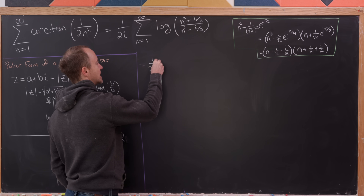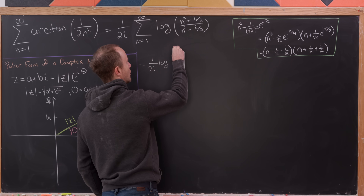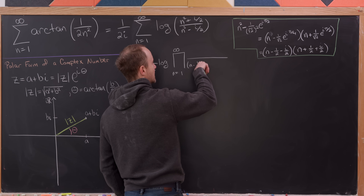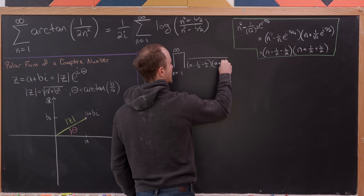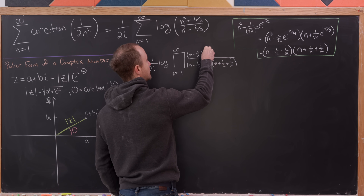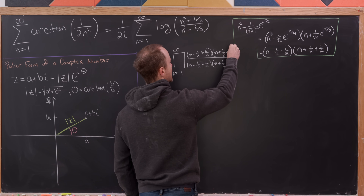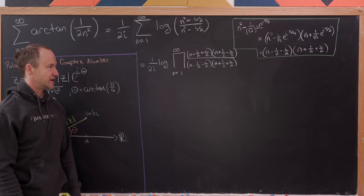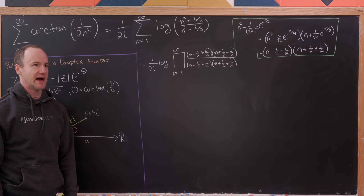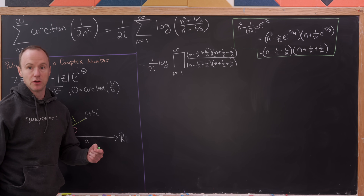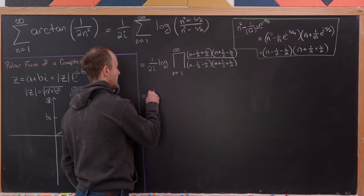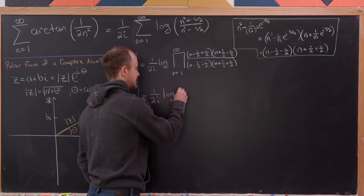The denominator has factors n minus 1/2 minus i/2 and n plus 1/2 plus i/2, while the numerator has n minus 1/2 plus i/2 and n plus 1/2 minus i/2 from the similar factorization. The careful way to do this would be to write it as a limit of a partial product and get a closed form, but let's do a slightly fast-and-loose method: we'll write out a bunch of terms and then see the cancellation.